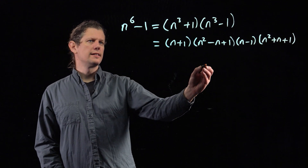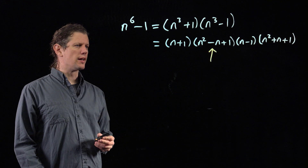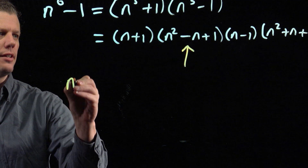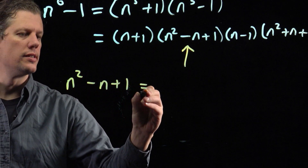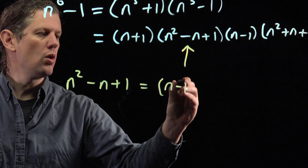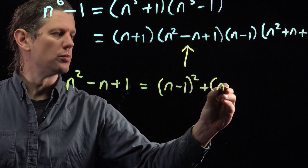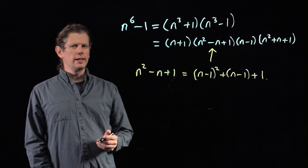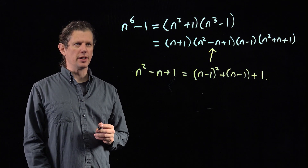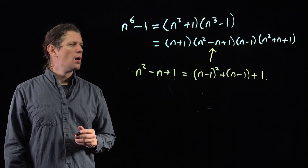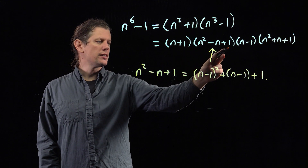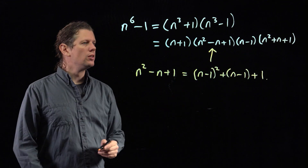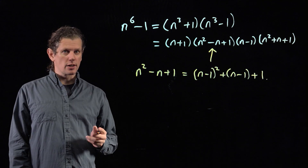What if p divides n⁶ - 1 because it divides (n² - n + 1)? There's an identity that helps here: n² - n + 1 = (n - 1)² + (n - 1) + 1. The question only asks about the minimal n for which p divides n⁶ - 1. But if p divides n² - n + 1, then it would have divided that factor for n - 1. So we don't need to worry about this case — it can't correspond to the minimal n.